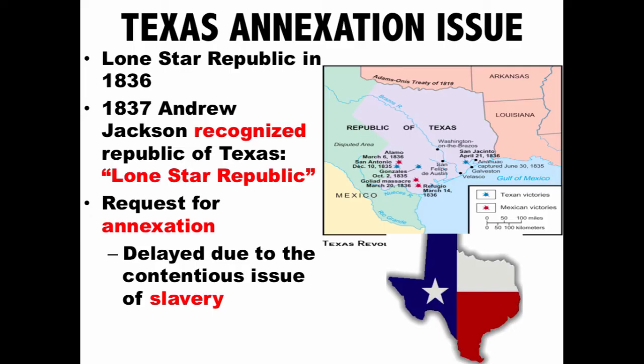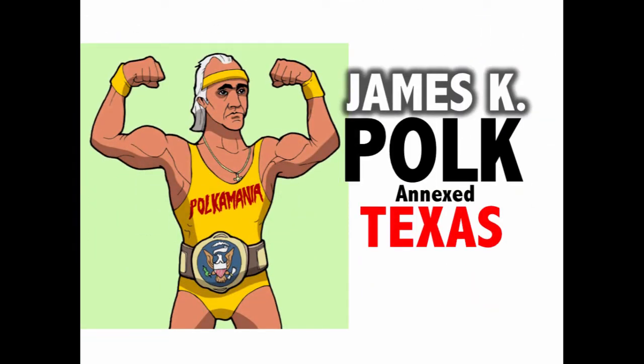Northerners were opposed because they knew Texas would enter the Union as a slave state — and it was so large it might possibly enter as multiple slave states. So Jackson avoided the Texas issue, did not try to annex it, and a bunch of other presidents followed that lead. Between 1836 and 1845, Texas was its own country, and the Texas issue was one the nation punted on because of sectional tension. This issue didn't get resolved until James K. Polk annexed Texas in 1845.